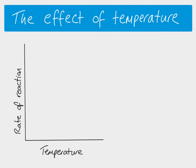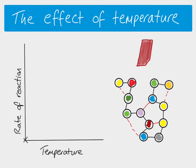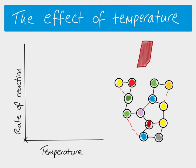Our enzyme is a globular protein and it's held in place by hydrogen bonds and some stronger covalent bonds. We've also got our substrate here. If we start off with a very low temperature, there's going to be zero reaction because there's not enough energy for collisions to take place successfully. In order for a reaction to happen, the substrate has to collide with the enzyme with enough kinetic energy that the collision is successful and the reaction takes place.